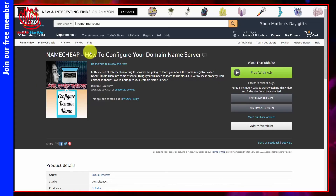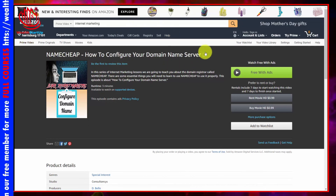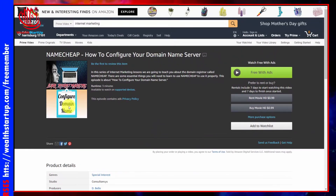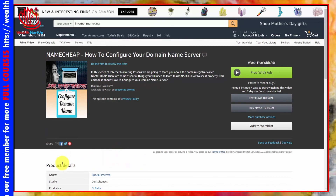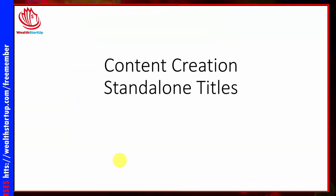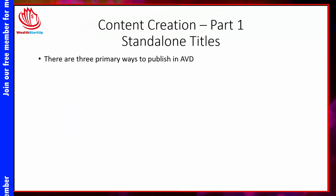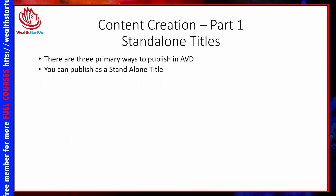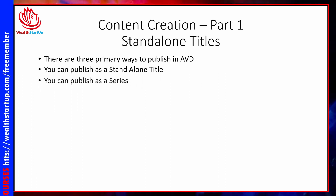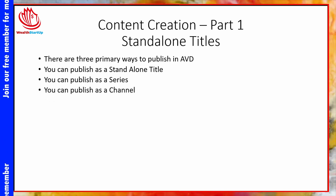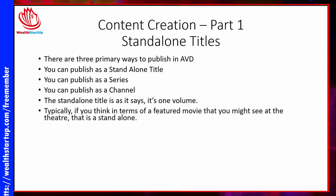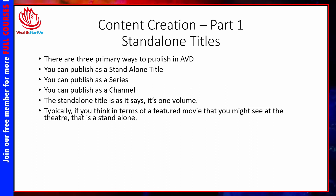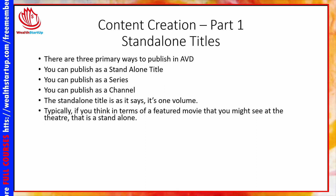You're looking at the inside of a video in Amazon Video Direct — a video all by itself with no seasons attached. This is called a standalone video. There are three primary ways to publish in Amazon Video Direct: as a standalone title, as a series, or as a channel. A standalone title is one volume or one video — think of it like a featured movie that doesn't require you to see anything before or after it to get the maximum benefit.